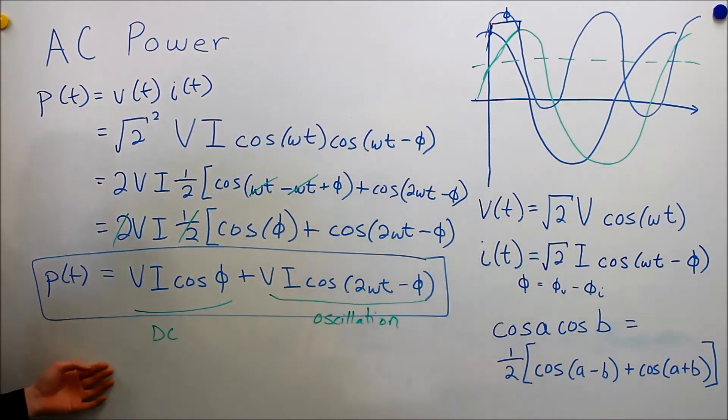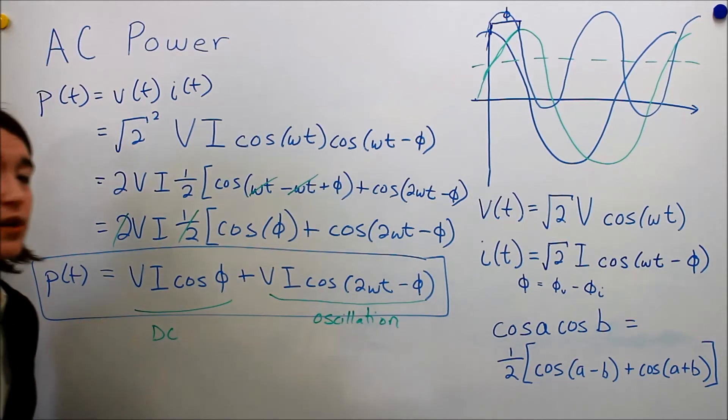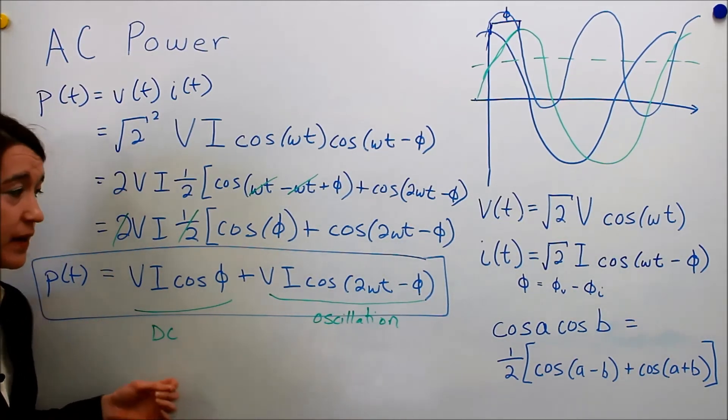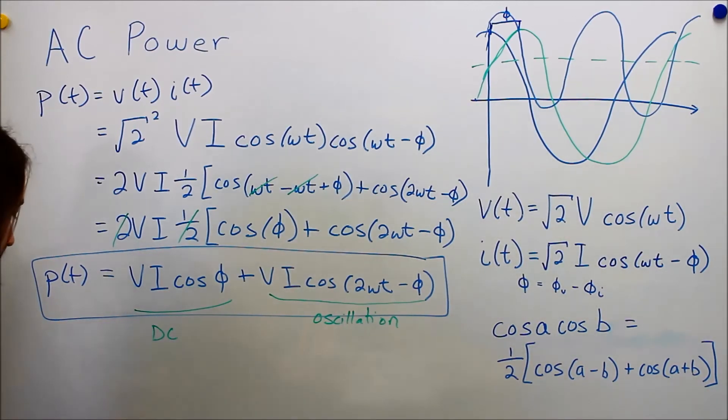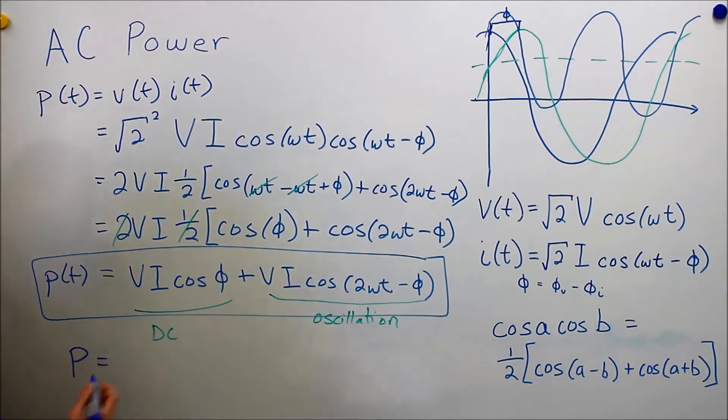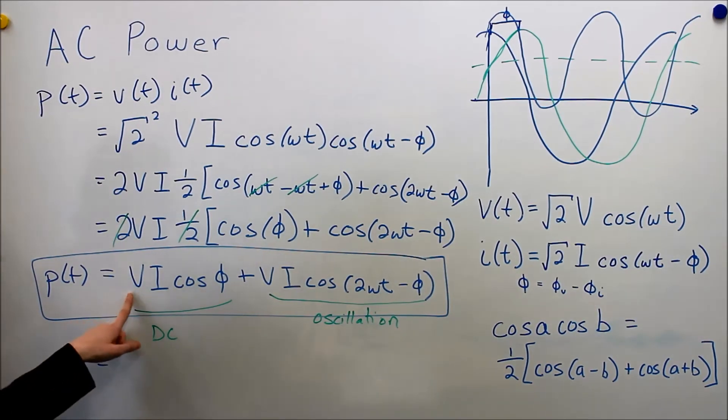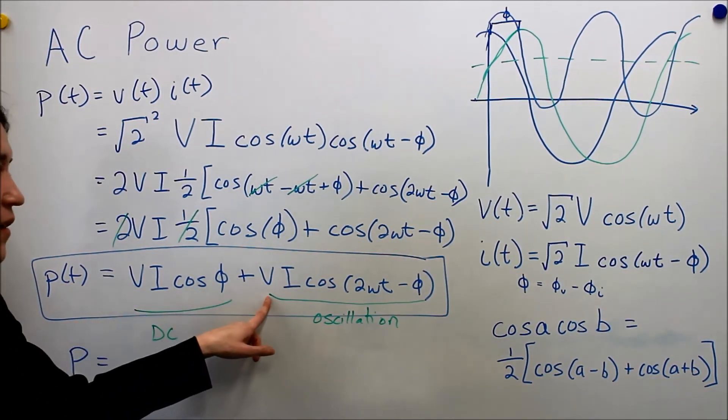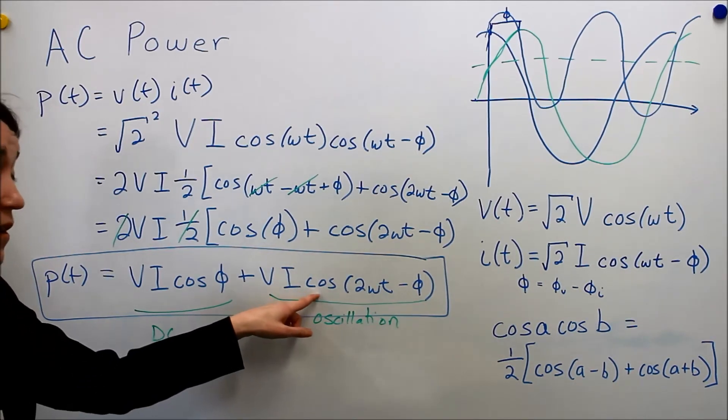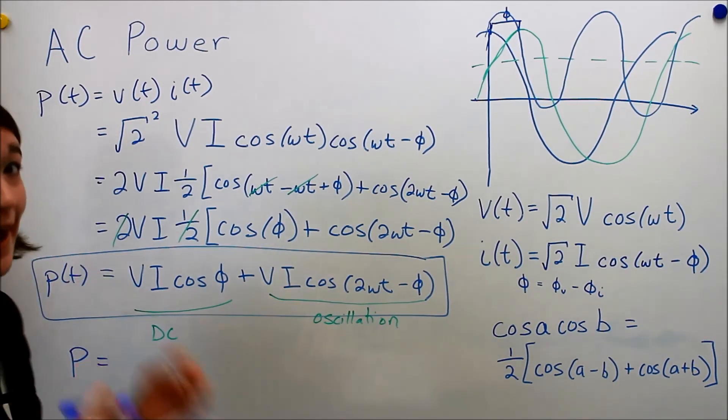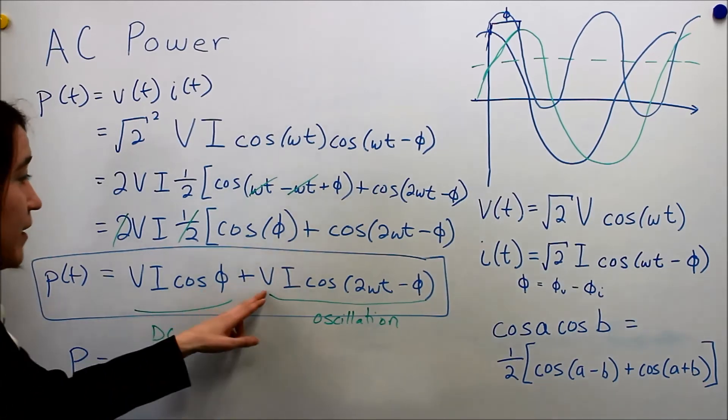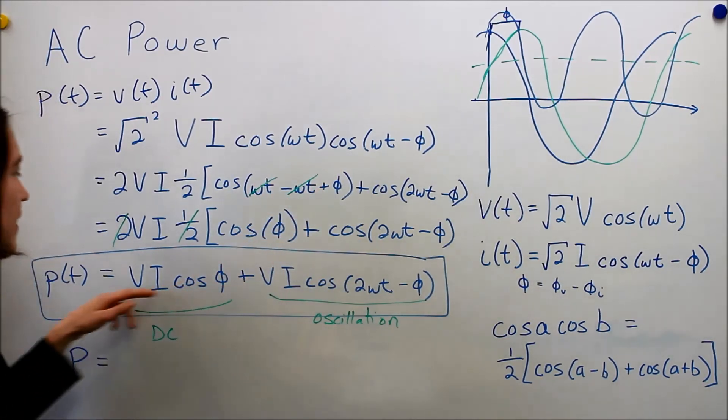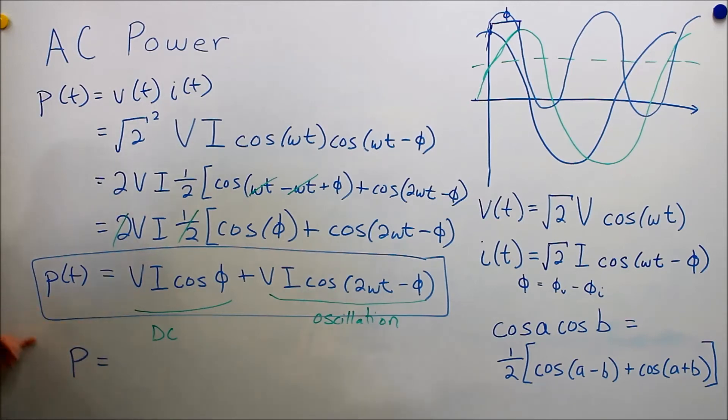Okay, so if now we want to look at the real power, the average power, we actually look directly at this equation. So now we want to find the real power, so that's p, the average power. Well, we have this DC component, and then we have this oscillatory component that's based on a cosine. If we take the average of a cosine, it's going to be zero. So actually, we can completely ignore this, and then we're just left with the DC component.